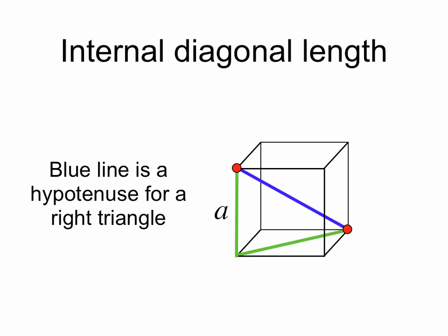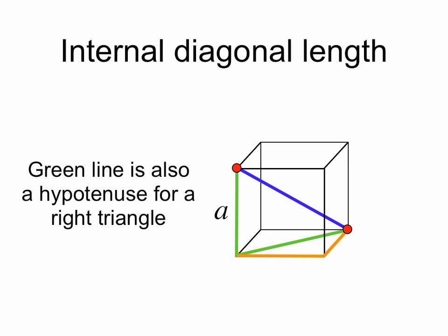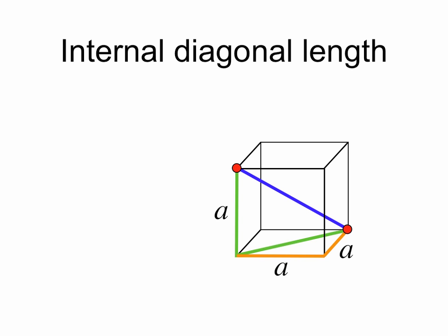Now the blue line is hypotenuse for a right triangle with legs shown in green. One of these legs has length a. But the other green line is also hypotenuse for yet another right triangle with legs shown in orange. And each of these legs is length a as well.